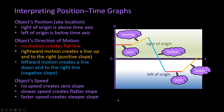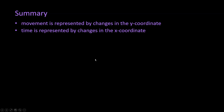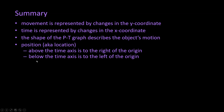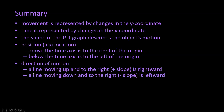This wraps up what we wanted to learn on position time graphs, so let's summarize. Movement is represented by changes in the y-coordinate, and time is represented by changes in the x-coordinate. When it comes to interpreting the position time graph, the shape will let us know the object's motion. In terms of position, if it's above the time axis, then the object is to the right of the origin. If the position timeline is below the time axis, then the object is to the left of the origin. When it comes to direction, a line moving up and to the right — a positive slope — indicates the object's moving rightward. Conversely, a line moving down and to the right — a negative slope — indicates that the object is moving leftward.